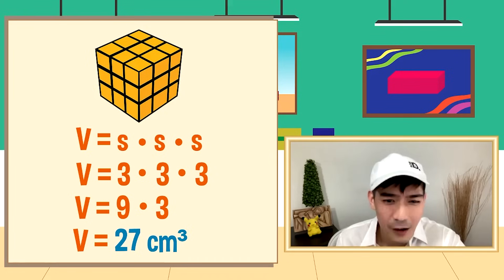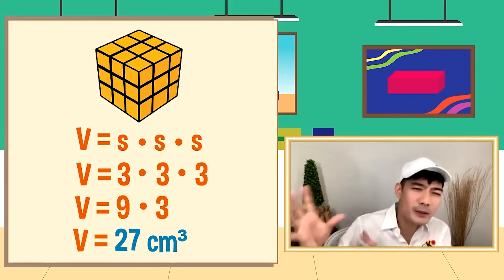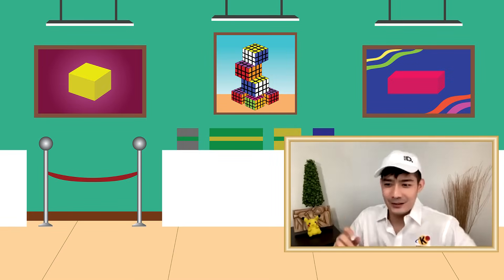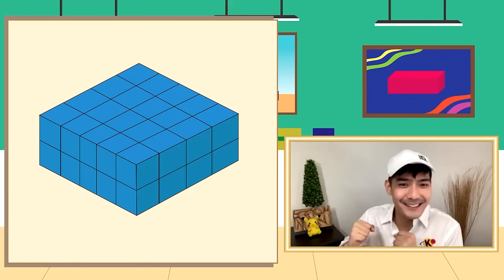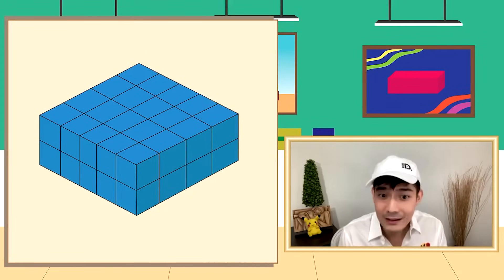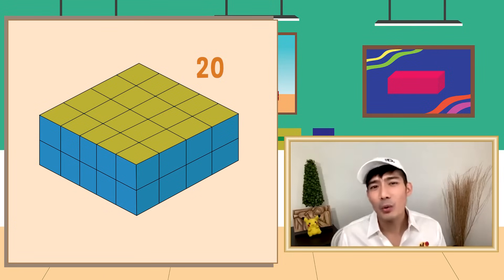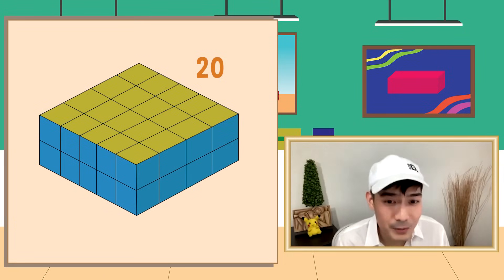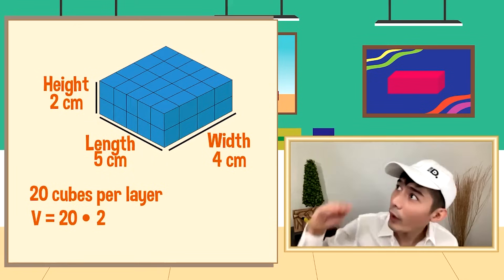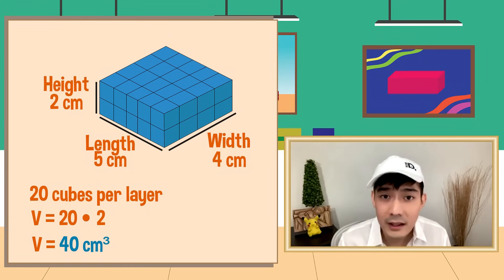Gusto niyo ba mag-solve ng volume ng mga bagay dito sa museum? Mapunta tayo sa iba. For sure, may maharap tayong kakaiba naman. Try nga natin bilangin kung ilang cubes meron ang top layer nito. Meron tayong 1, 2, 3... 20 yan — may 20 cubes ang top layer nito. At dahil dalawang layers ito, multiply natin sa dalawa. So 20 times 20... 40 cubic centimeters, or 40 cm³.